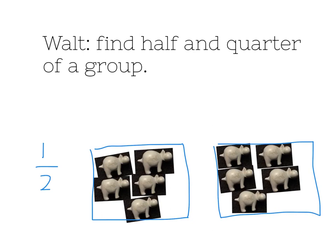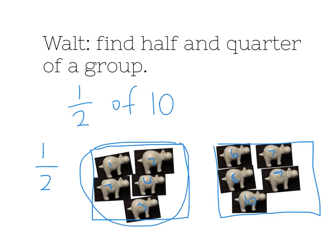Just check that I've got one, two, three, four, five, six, seven, eight, nine, ten. Ten hippos — so half of ten. And in this group here I've got one, two, three, four, five. And in this group here I've got one, two, three, four, five. So half of ten equals five.